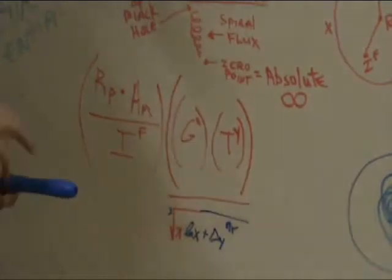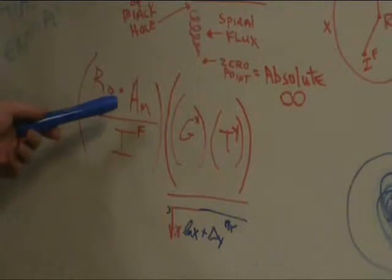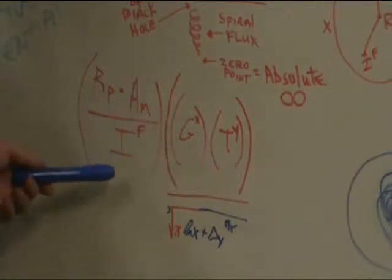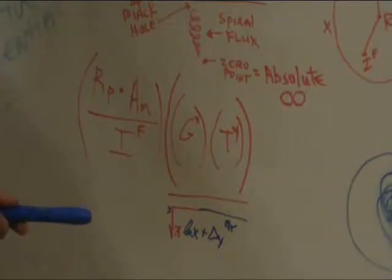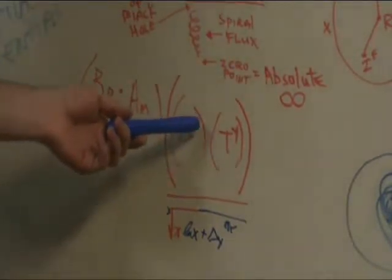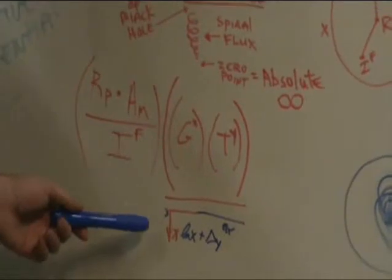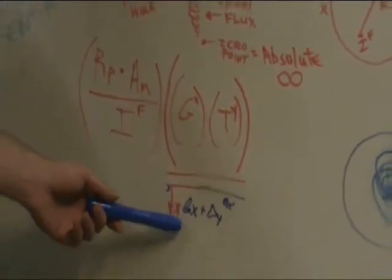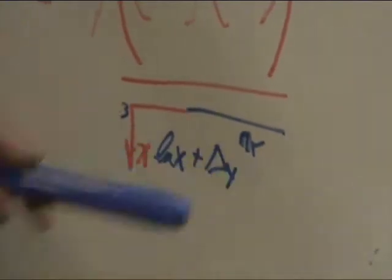Now, what we have is relative potential times anamorphic mass over infinite force. Then you have gravity to the x and time to the y over the cube root of x ln x plus the change in y to the pi power.